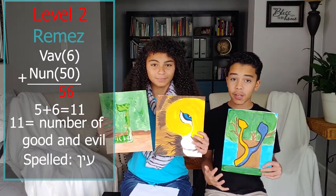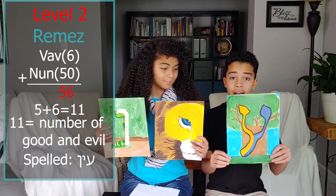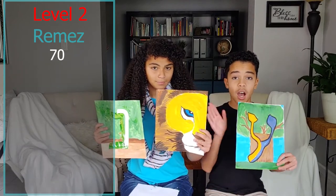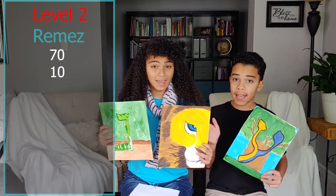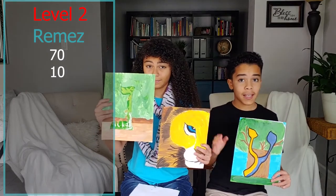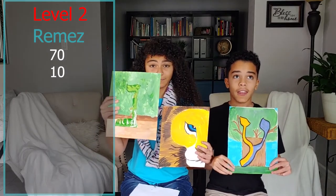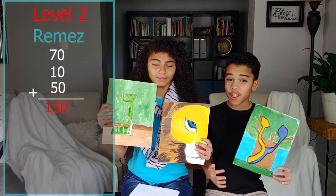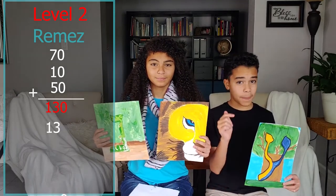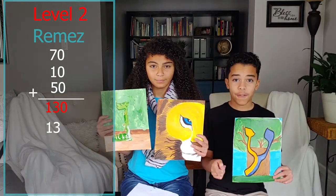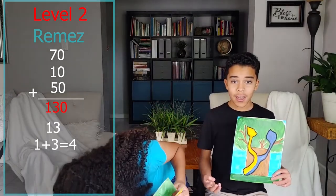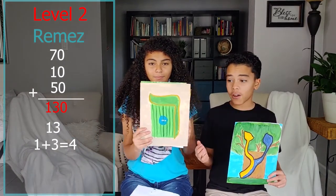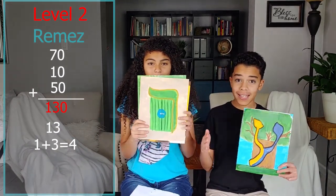If you add the numerical values together — ayin is 70, plus yod is 10, plus nun sofit is 50 — you get 130, which is 13 if you drop the zero. If you add 1 plus 3, you get 4. And the numerical value of the dalet is 4.